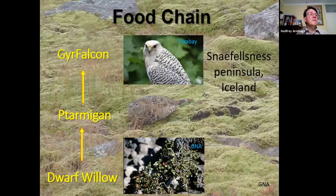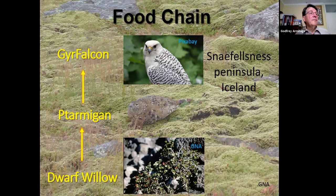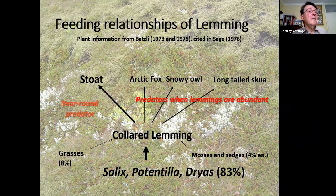Within ecosystems, organisms are part of food chains — you're no doubt familiar with the school example: grass, rabbit, fox. Here on the tundra of the Snæfellsnes peninsula, where I nearly trod on a camouflaged ptarmigan, we see it feeds on dwarf willow, and gyrfalcons feed on it. More links can be added to show food webs: for example, lemmings feed on willow, cinquefoil, and mountain avens; stoats feed on them, and when lemming numbers explode, other predators join in and switch to feed on them.